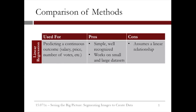Linear regression is used to predict a continuous outcome. It is simple and commonly used, and it works on small and large datasets. The downside is that it assumes a linear relationship. If we have a nonlinear relationship, we need to add variables to our analysis.